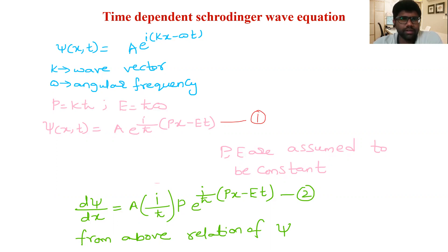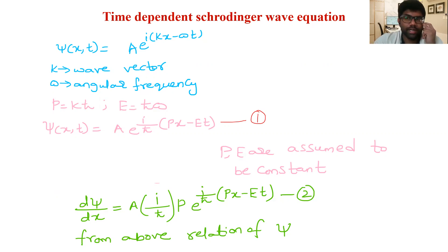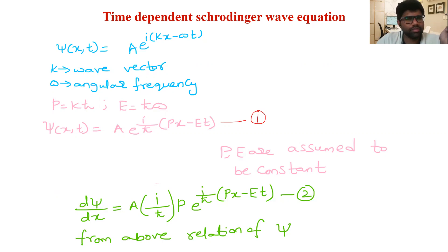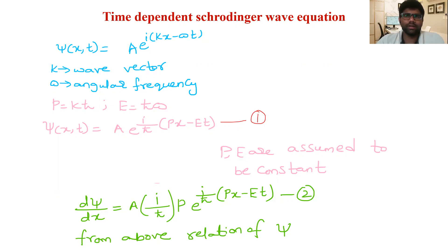We know that momentum p is equal to ħk. We know that momentum is equal to h/λ. When we multiply and divide by 2π, h/2π becomes ħ and 2π/λ becomes k. So p = ħk. Similarly, energy E = ħω, since ħ = h/2π and ω = 2πν, so the 2π cancels and we get E = hν.